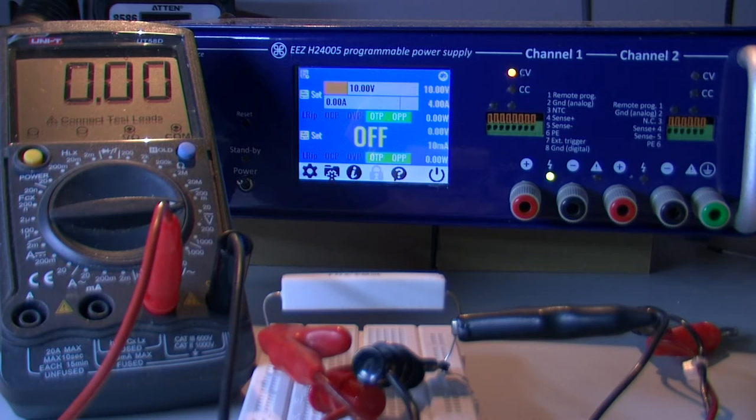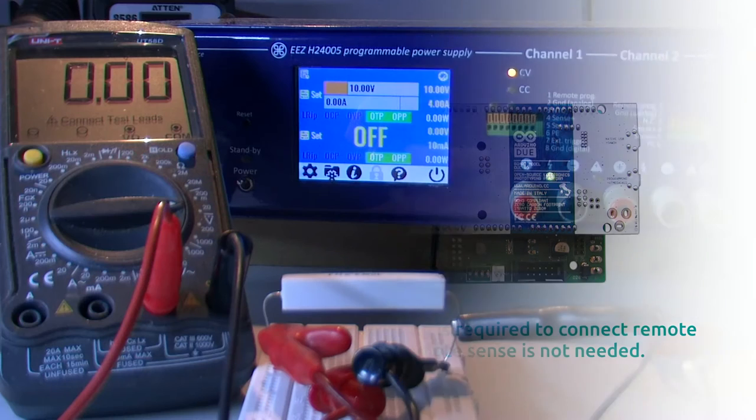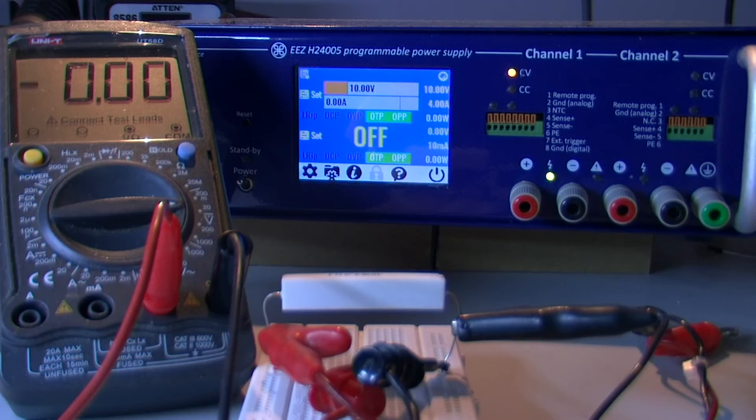In our case we are not using any external wiring for connecting remote sensing with power output inputs, and a small signal relay is used to do that internally. So by default remote sensing inputs are connected to power outputs.